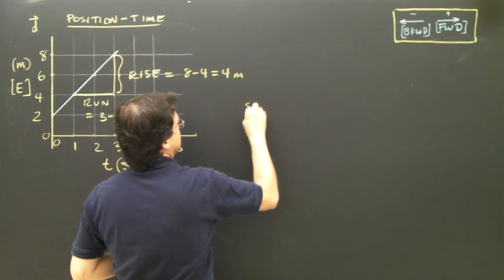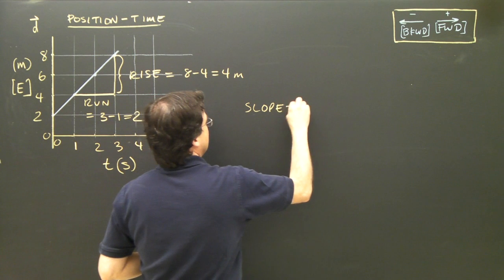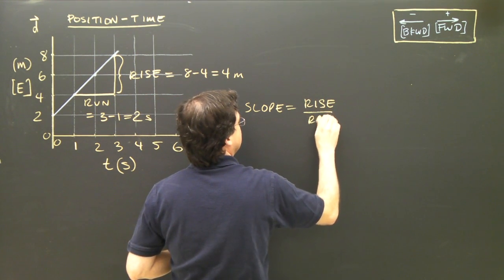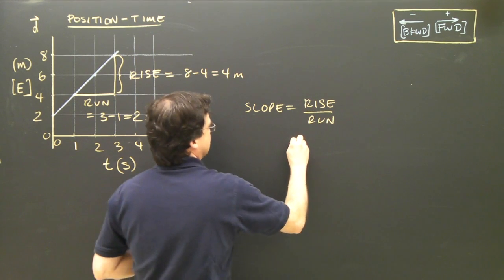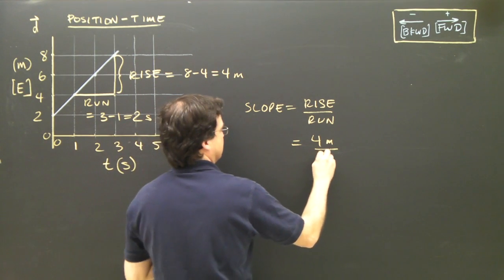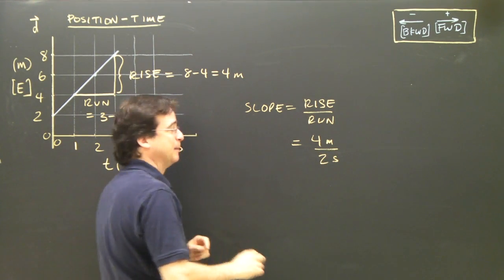Now, we calculate the slope. The slope is equal to the rise divided by the run. And so, it's equal to my rise is 4 meters. And my run is 2 seconds.